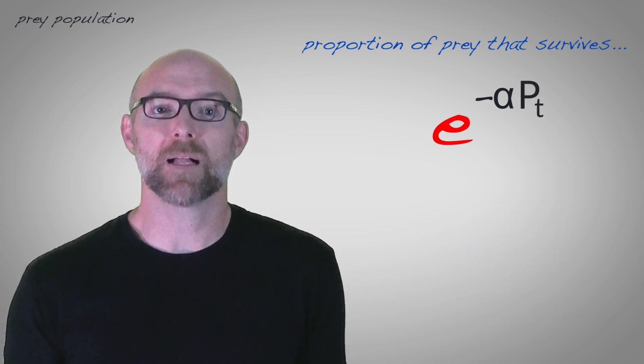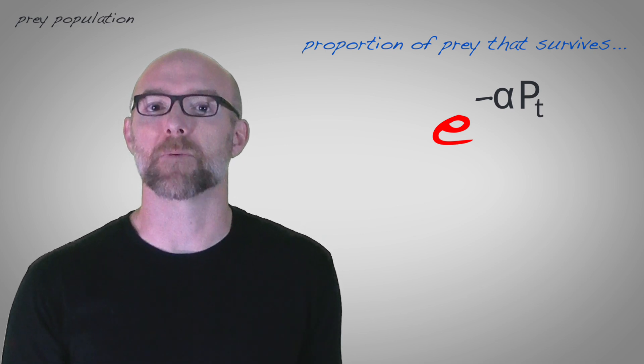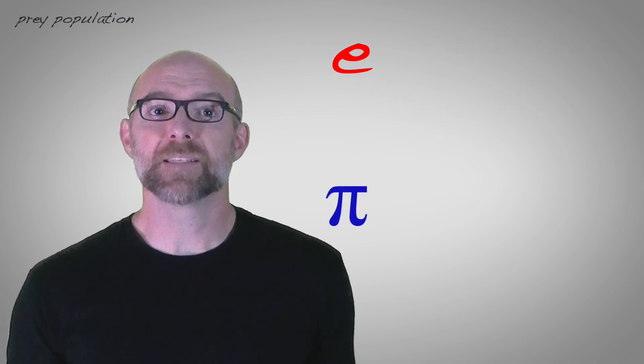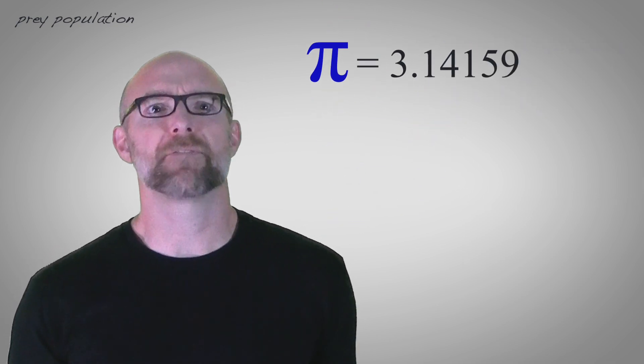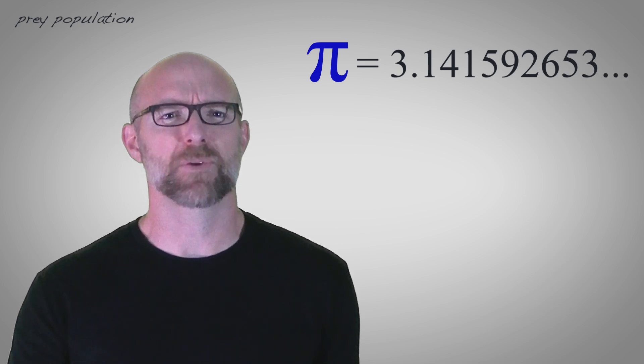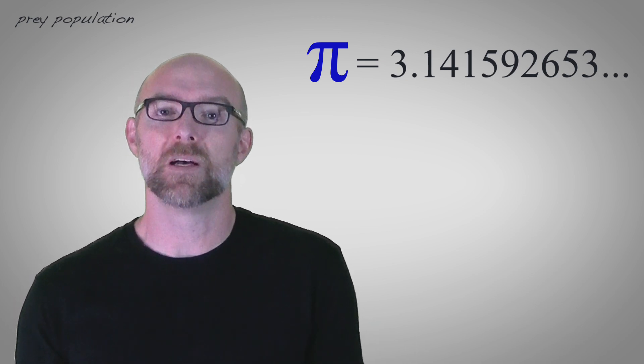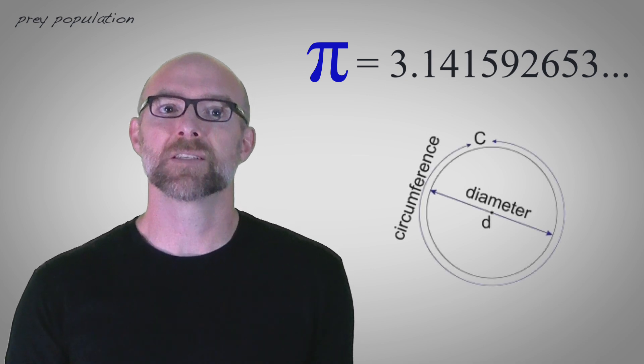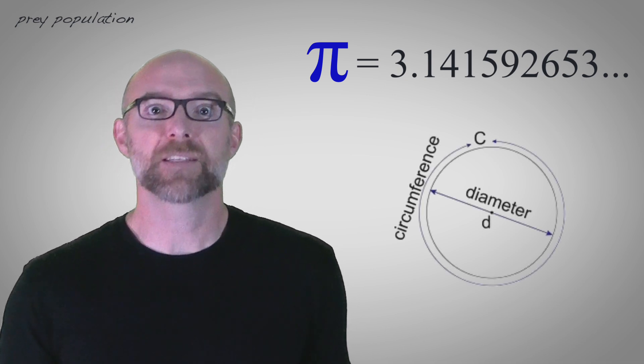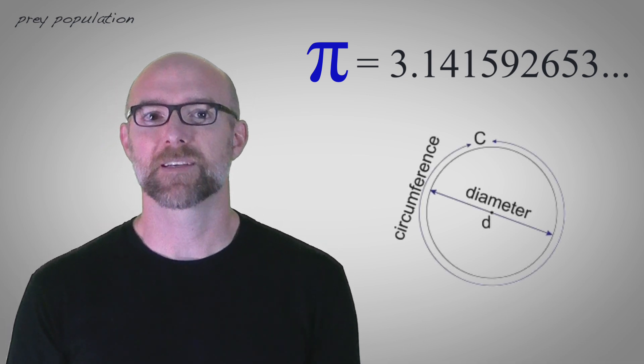And e, well, e is actually a number, like pi. Pi is 3.141592653 and so on. Pi is a number that represents the ratio of a circle's circumference to the circle's diameter. It's useful in lots of geometric calculations.